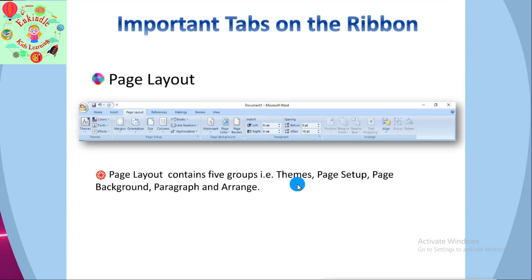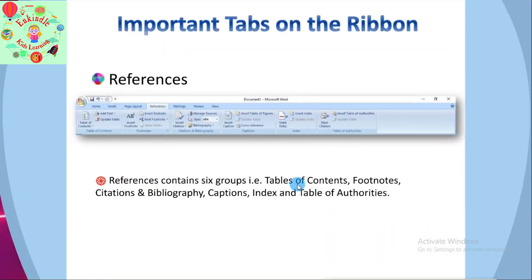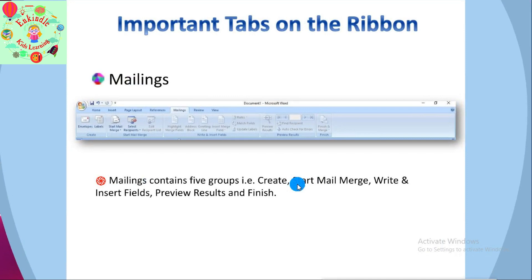The third tab is the Page Layout tab with five groups: Themes, Page Setup, Page Background, Paragraph, and Arrange. The fourth tab is References, with six groups: Table of Contents, Footnotes, Citations and Bibliography, Captions, Index, and Table of Authorities. The fifth tab is Mailing, with five groups: Create, Start Mail Merge, Write and Insert Fields, Preview Results, and Finish.